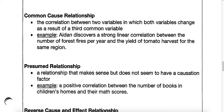A common cause relationship is the one we just talked about — the correlation between two variables in which both variables change as a result of a third common variable. For example, Aiden discovers a strong linear correlation: he plotted the number of forest fires and the yield of the tomato harvest, suggesting they are related — maybe more forest fires means more tomatoes. That sounds weird; there's probably a third common cause. I'm guessing it was a hot summer season that caused a lot of forest fires and that heat also caused a high yield of tomatoes.